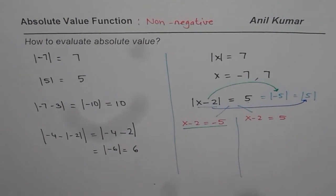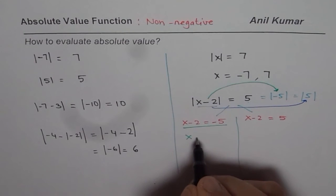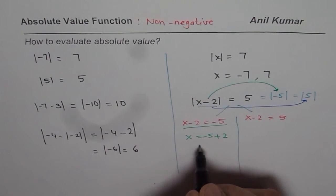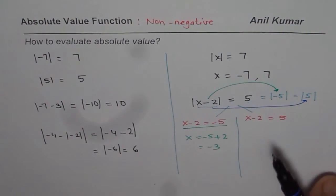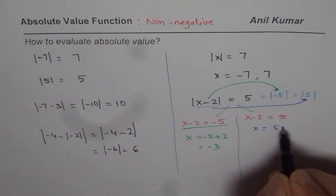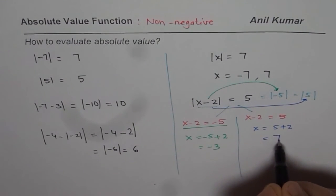We are getting two different solutions. Let's do them one by one. Here, solve like equations: x equals -5, when you take it on this side plus 2, that is -3. On the right side, x equals 5 plus 2, which is 7.